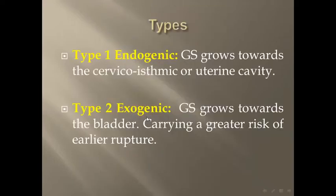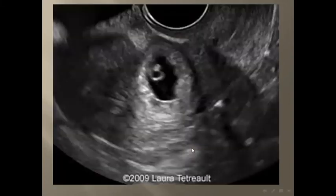There are two main types. Type one is endogenic, where the gestational sac grows towards the cervix or uterine cavity, and the prognosis is better. The other type is exogenic, with worse prognosis, where the gestational sac grows towards the bladder — towards the outside — carrying a greater risk of uterine rupture. The management is more difficult than the endogenic type.